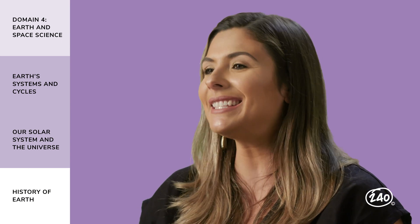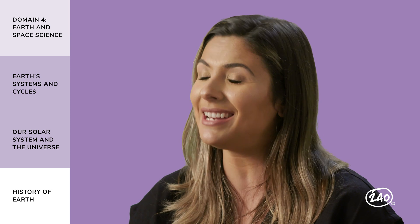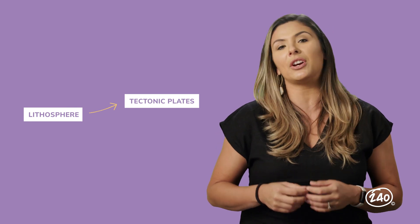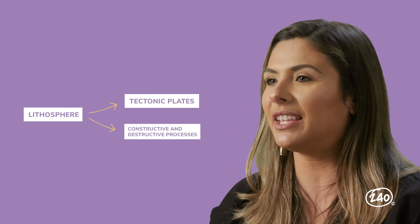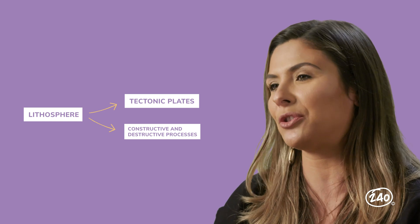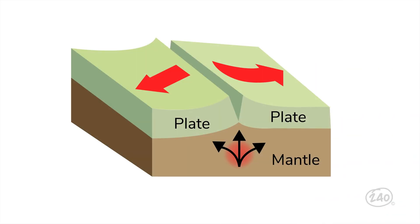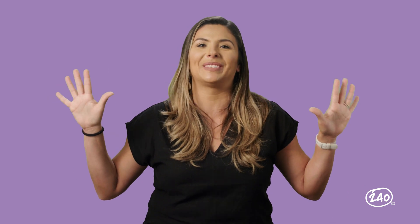Last up here is the history of earth. This section covers how the earth was formed, including its layers, and how it changes over time. One key layer of the earth is the lithosphere, which forms tectonic plates. Movement within the lithosphere drives constructive and destructive processes — for example, as two plates move apart, the mantle comes up and constructs new crust. That's the end of the earth and space science portion.